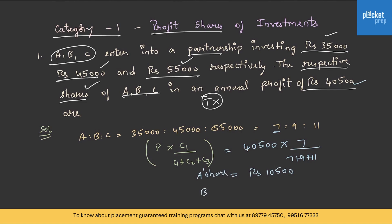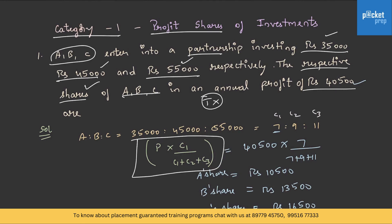Similarly, B's share will be Rs. 13,500 and C's share will be Rs. 16,500. These are C1, C2 and C3. On substituting the value, you get A's share. For B's share, use C2; for C's share, use C3. By using this formula, we can find the individual share.